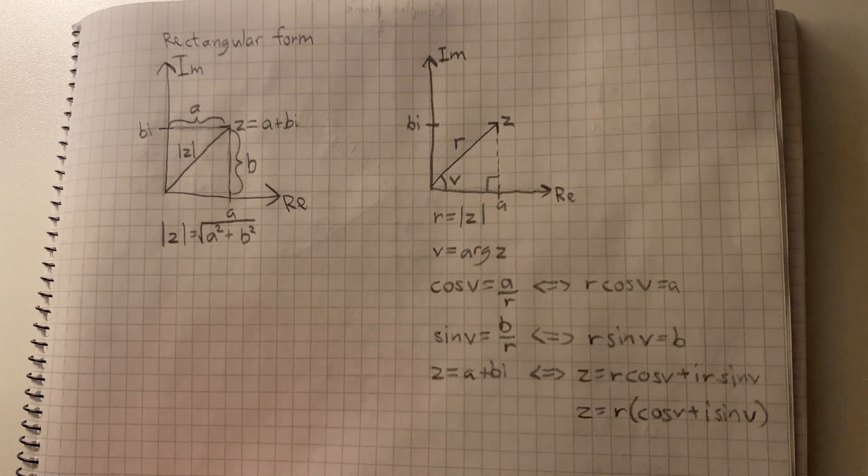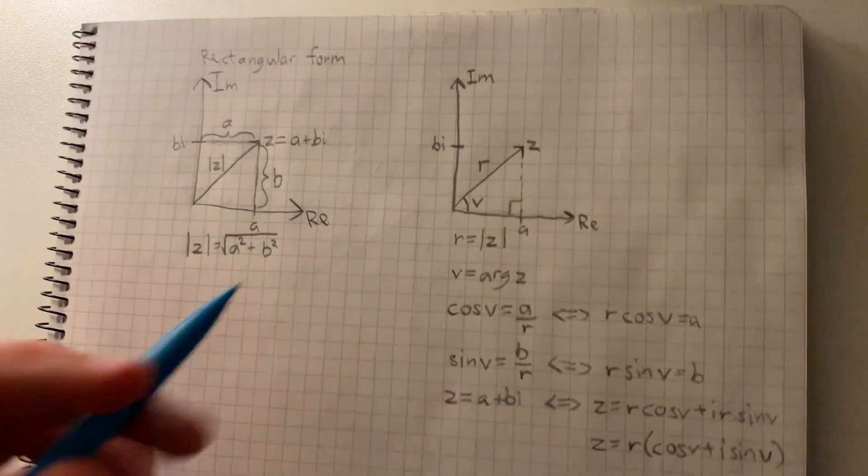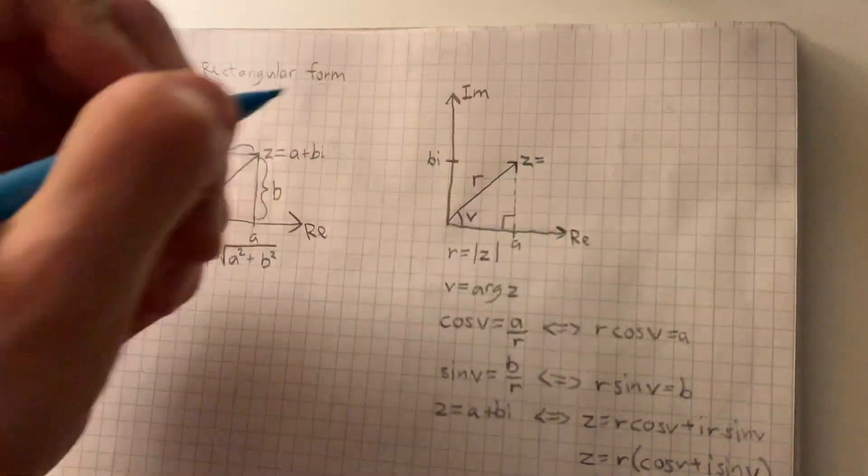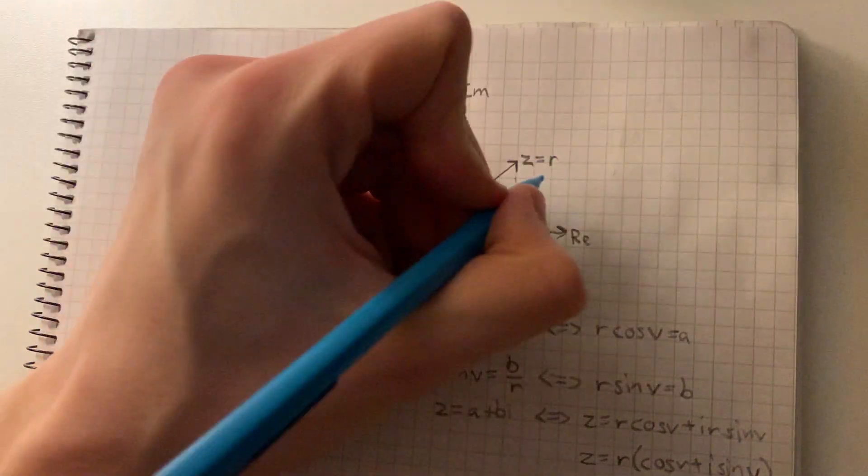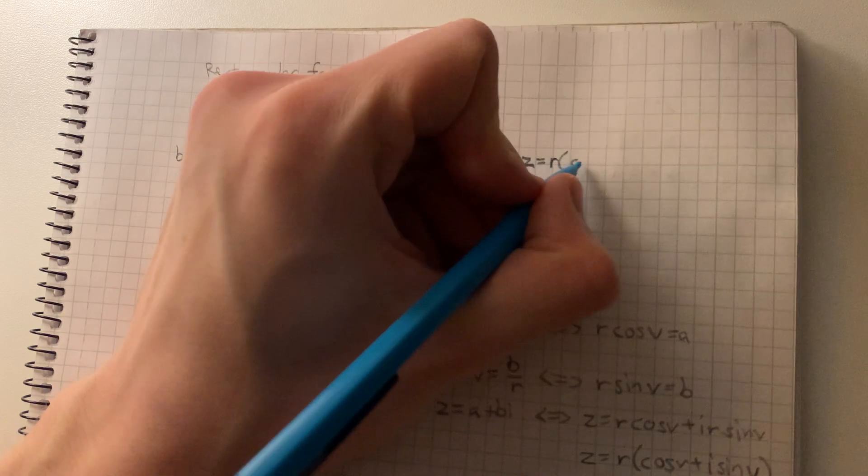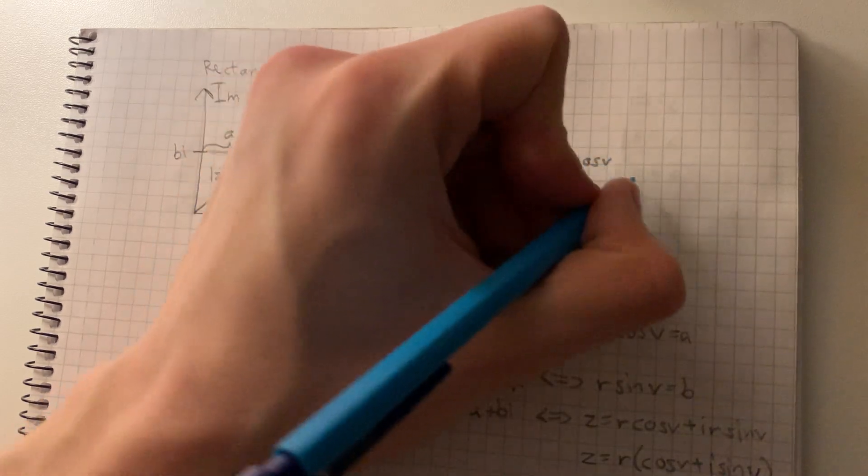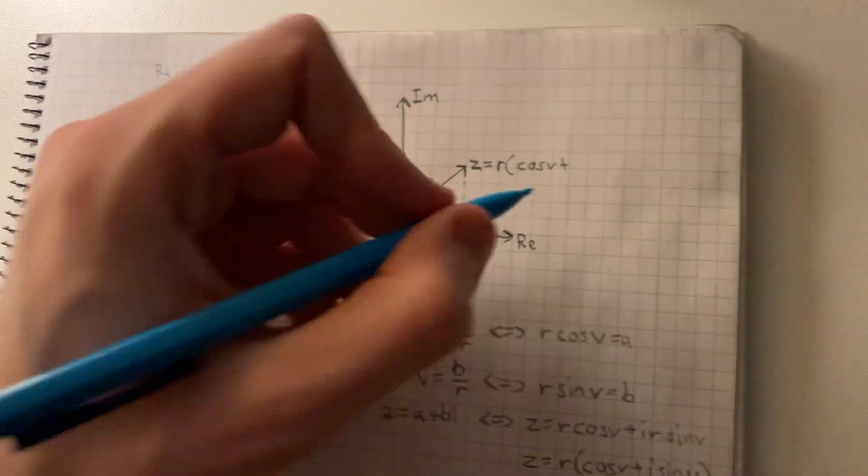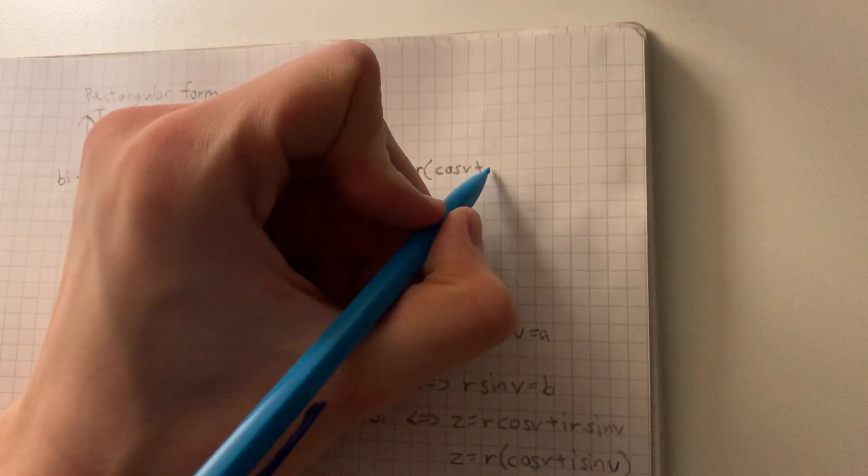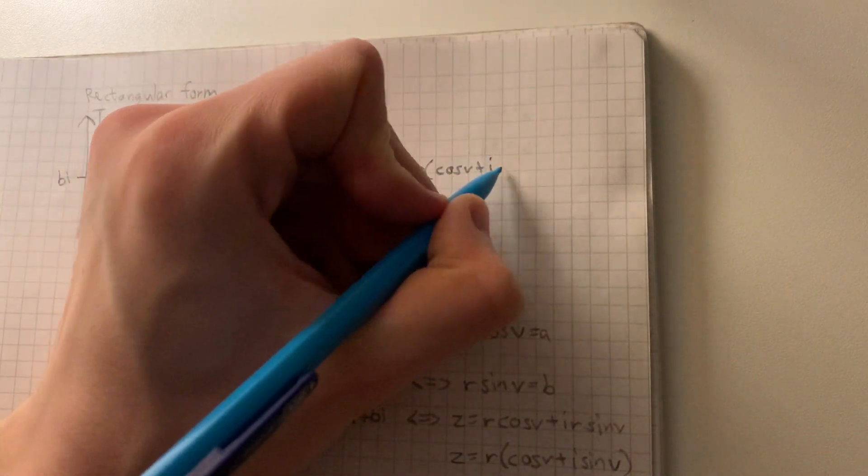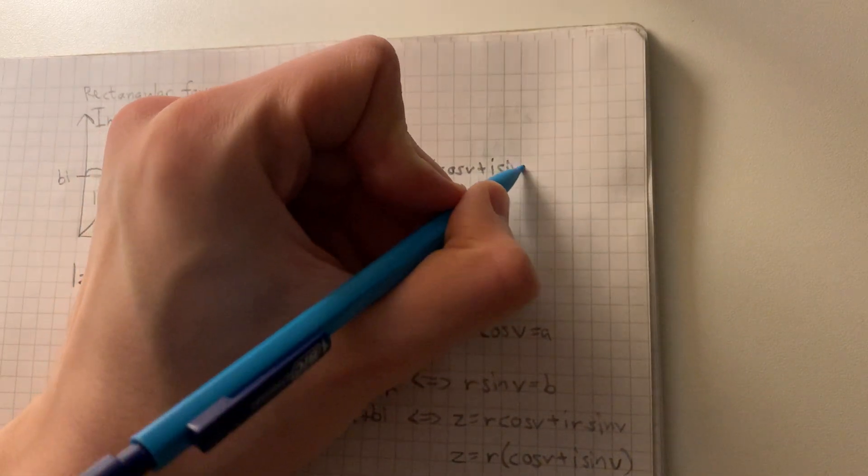This right here is what we call polar form: R times cosine of V plus i sine of V.